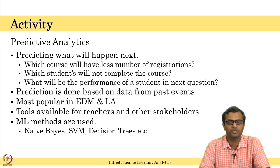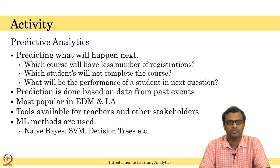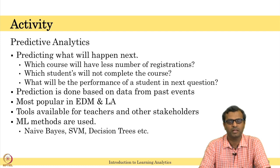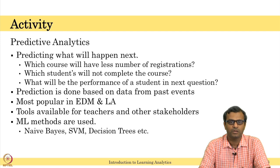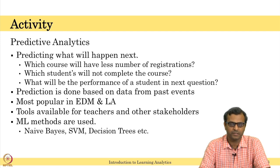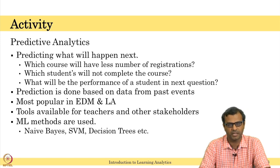For example, if students registering for the networking course over the last three years show only 60 percent registration, then we can expect that next year also only 60 percent will register, unless some event happens that causes a change. So we can predict what will happen in the next semester based on past data.